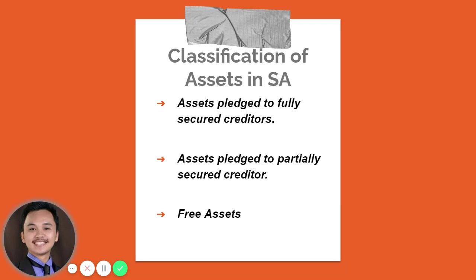In preparing the Statement of Affairs, historical cost is irrelevant — only the net realizable value is used. Book values are irrelevant in the preparation of the Statement of Affairs for corporate liquidation. Assets pledged to fully secured creditors are those assets used as collateral to pay a liability in full. Assets pledged to partially secured creditors, from the term itself, are assets used as collateral to pay only a partial amount of existing liabilities.